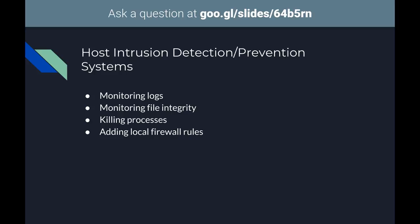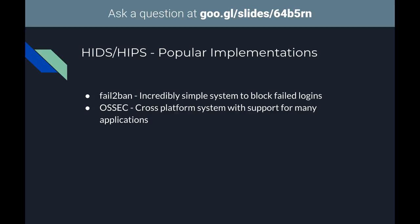Host-based intrusion detection and prevention systems are one of my favorites. They generally work by monitoring log files, monitoring file integrity, killing processes, and adding local firewall rules as a prevention mechanism. If you're just starting out I'd recommend checking out fail2ban — it's super simple with lots of great guides. It basically just blocks failed logins: it watches SSH log files, sees a user has tried to log in five times with an incorrect password, and adds an iptables rule to block that IP.